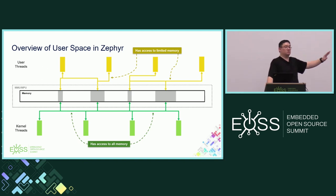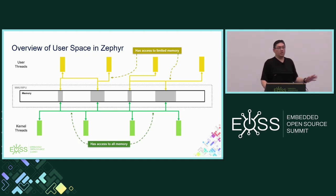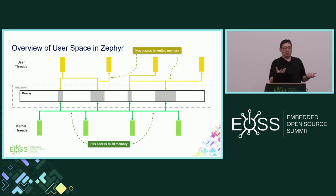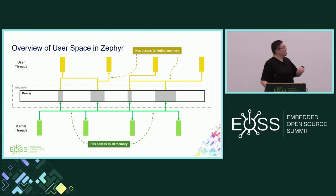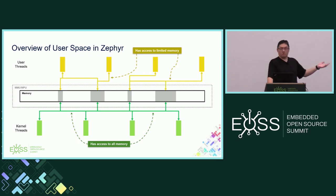What you are limiting in user mode is basically limiting user threads from accessing certain memory — not exactly memory in terms of SRAM or memory-mapped flash, but limiting access to memory addresses. This means MMIO, hardware register space, and memory-mapped flash areas. Kernel threads have access to all of this. That's just the user space model in Zephyr.